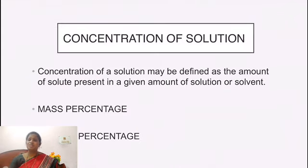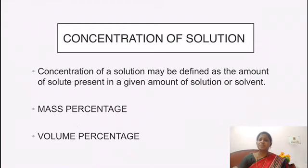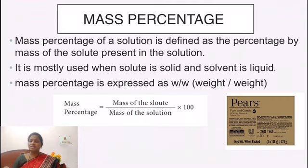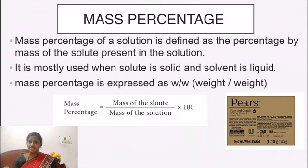Solubility of a solution can be measured in two ways: mass percentage and volume percentage. Mass percentage is defined as the percentage by mass of the solute present in the solution. It is mostly used when the solute is in solid state and the solvent is in liquid state. Mass percentage = (mass of solute / mass of solution) × 100.